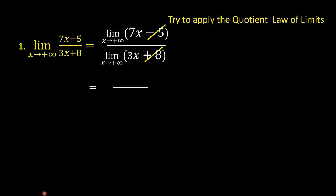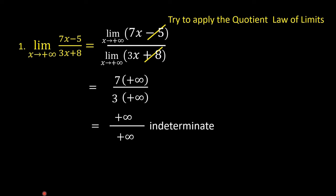The limit of 7x as x approaches positive infinity is positive infinity, and the limit of 3x as x approaches positive infinity is also positive infinity. Positive infinity over positive infinity is indeterminate. We can avoid this indeterminate result.